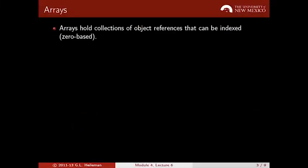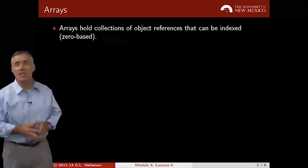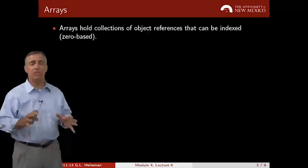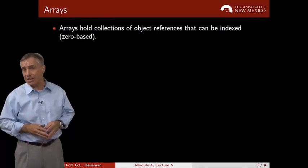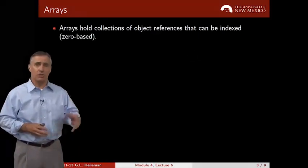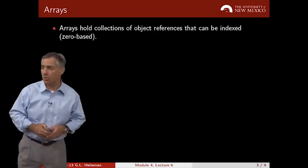Arrays hold collections of object references that can be indexed starting at zero. This is zero-based addressing. If you want the first element in an array, you index location zero, one, and so forth.